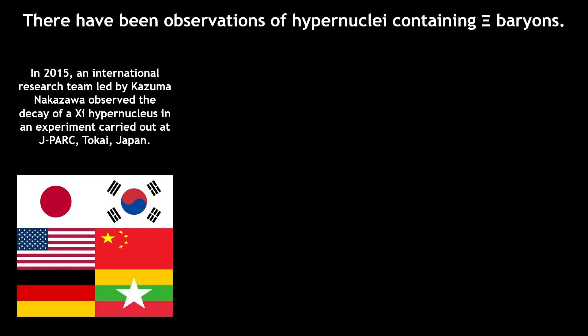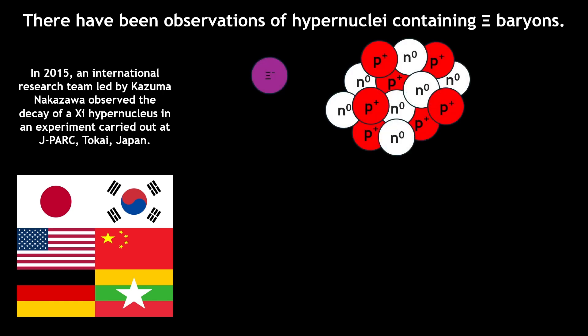led by Kazuma Nakazawa, a senior professor of Gifu University, observed the decay of a xi-hypernucleus in a nuclear emulsion experiment carried out at J-PARC, Tokai, Japan.